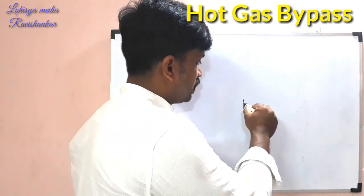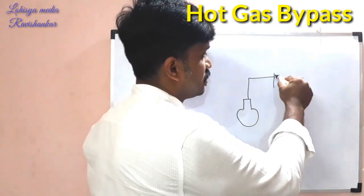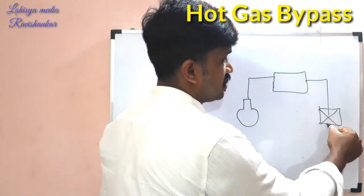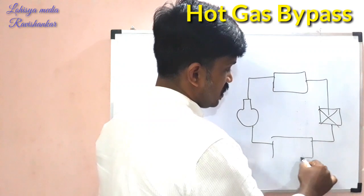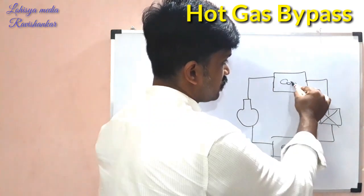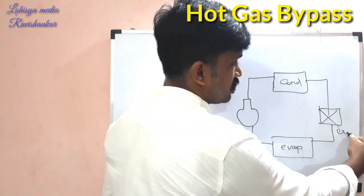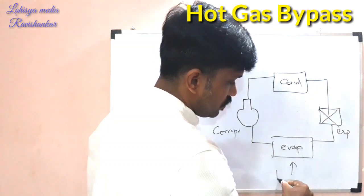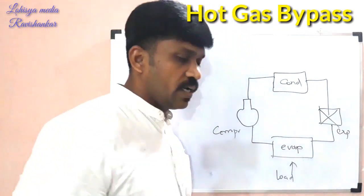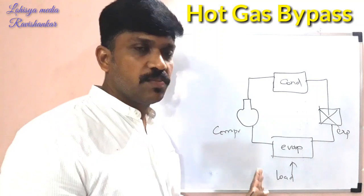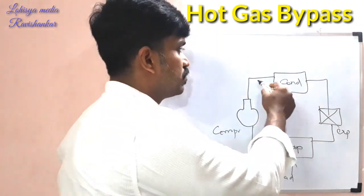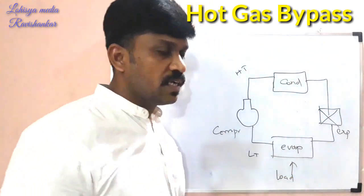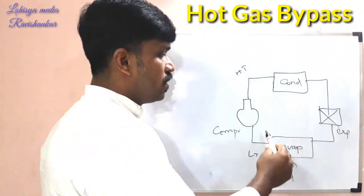This is a compressor. Condenser. Expansion. Evaporator. It is a compressor. Now, this is a load. This load is very low. This cycle is high temperature. This is a load temperature. This cycle is low — it is very low.